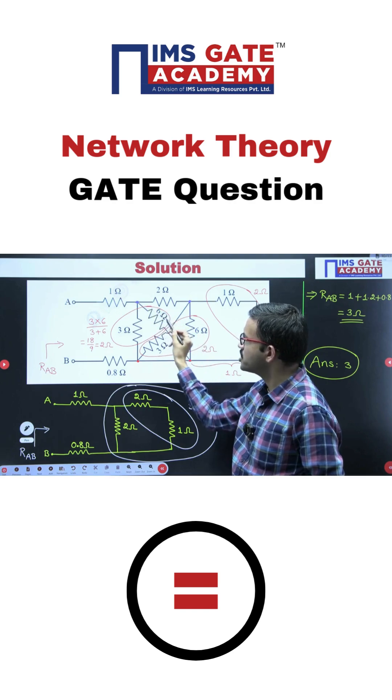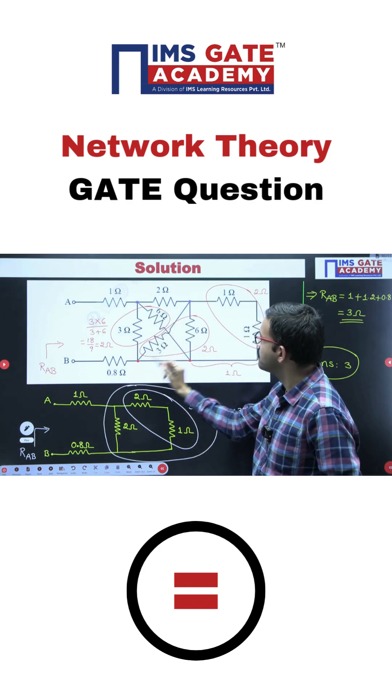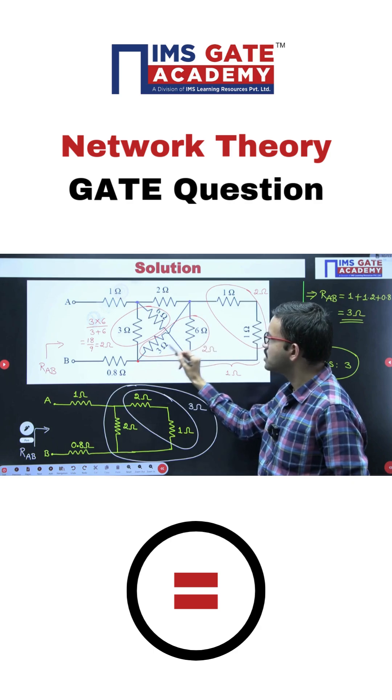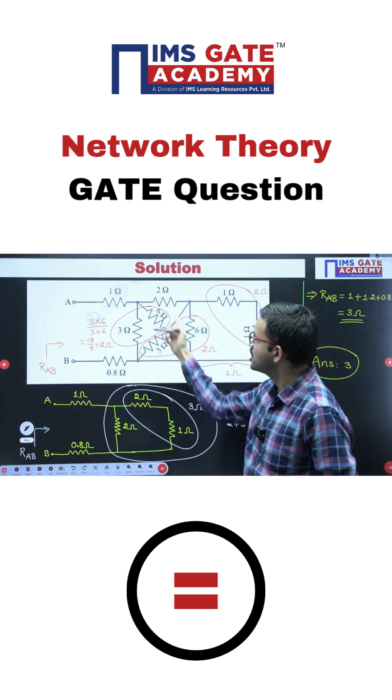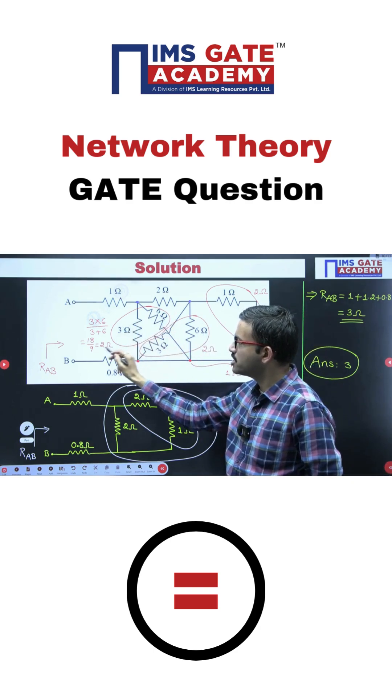Similarly, here also between these two points you are having 3 ohm and 6 ohm connected in parallel. In parallel you are getting 3 and 6 parallel combination, giving you 2 ohm resistor.